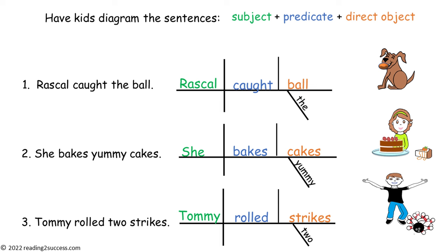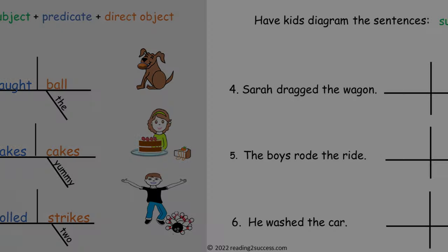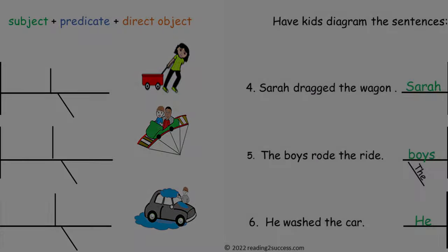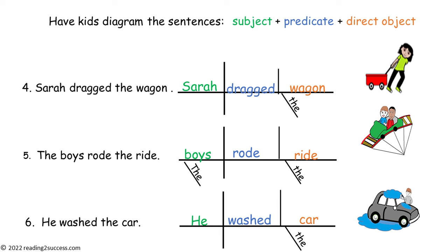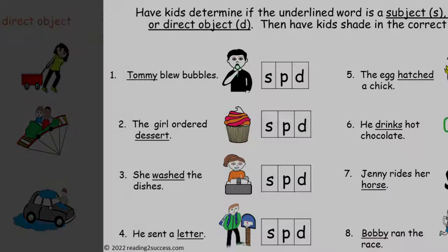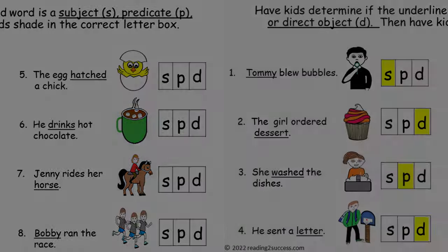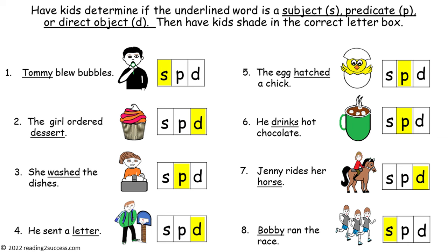Now have kids diagram sentence two and sentence three. Then have kids diagram sentences four, five, and six — here is a completed example. Next, have kids determine if the underlined word is a subject, predicate, or direct object, then shade in the correct letter box. Here is the completed example.